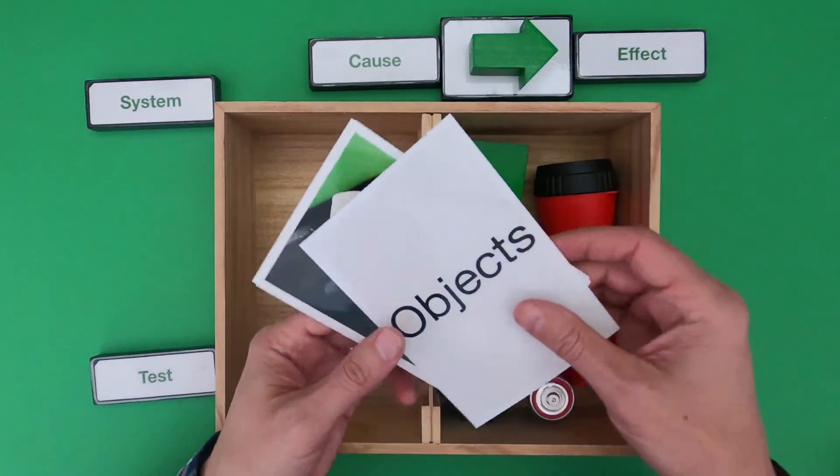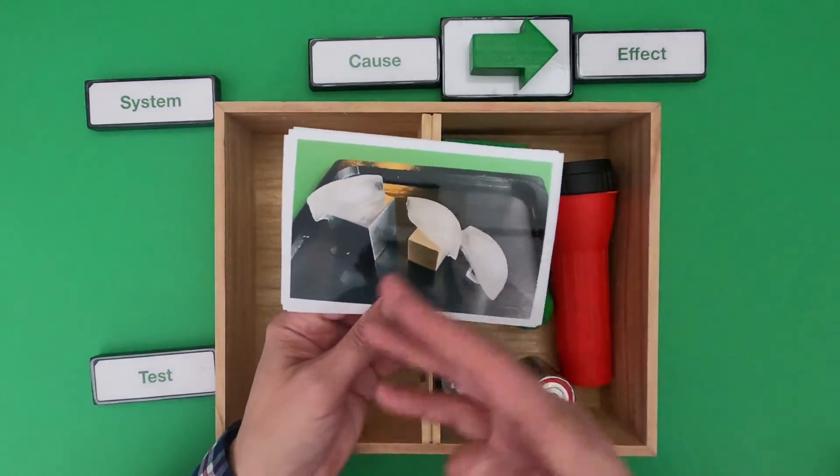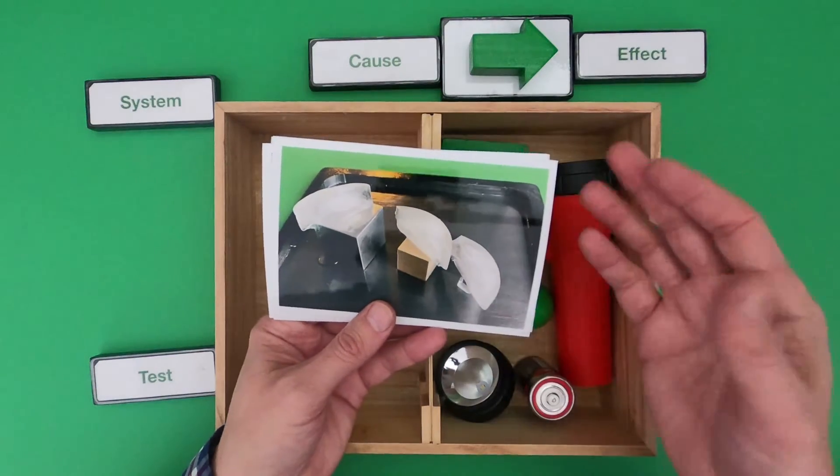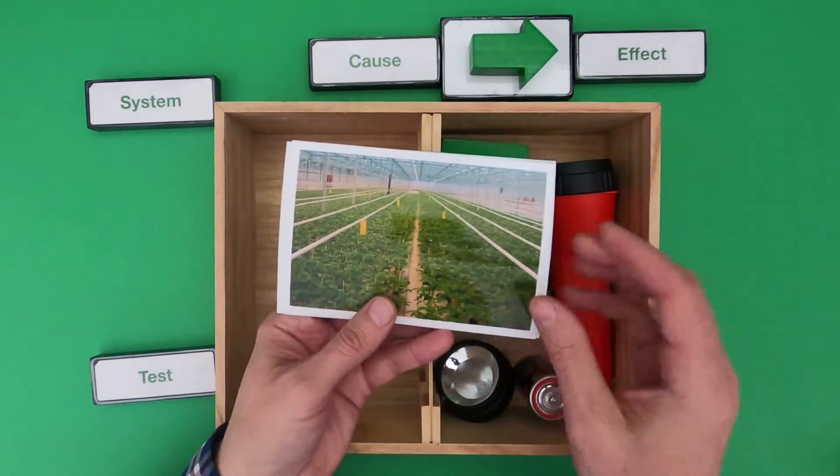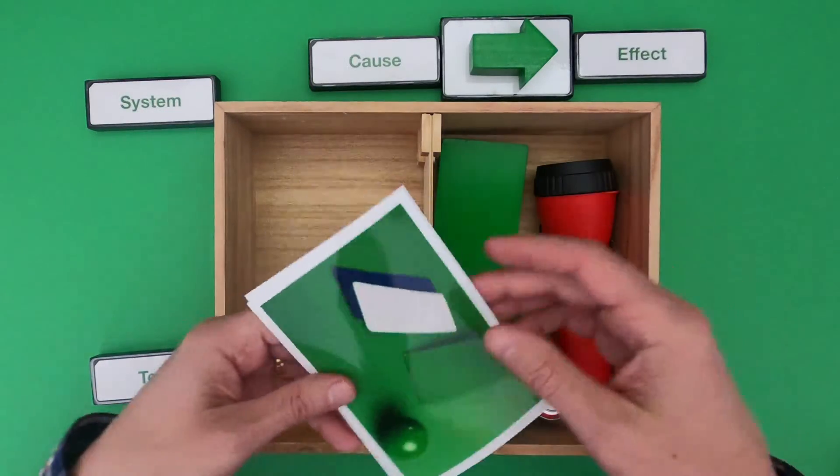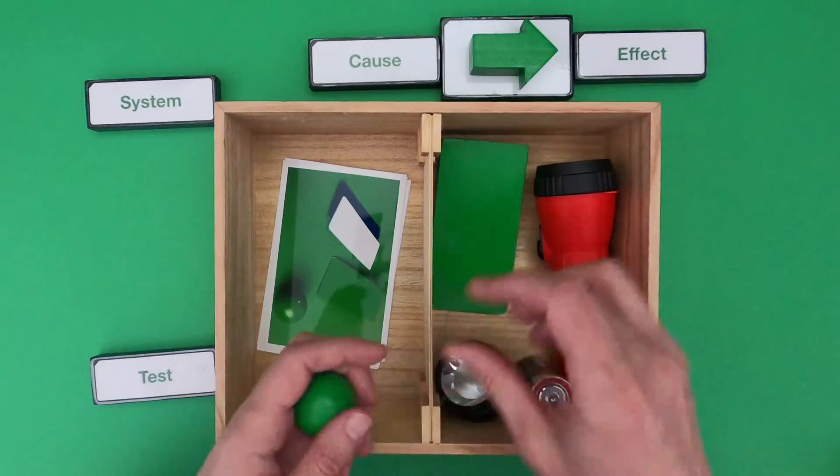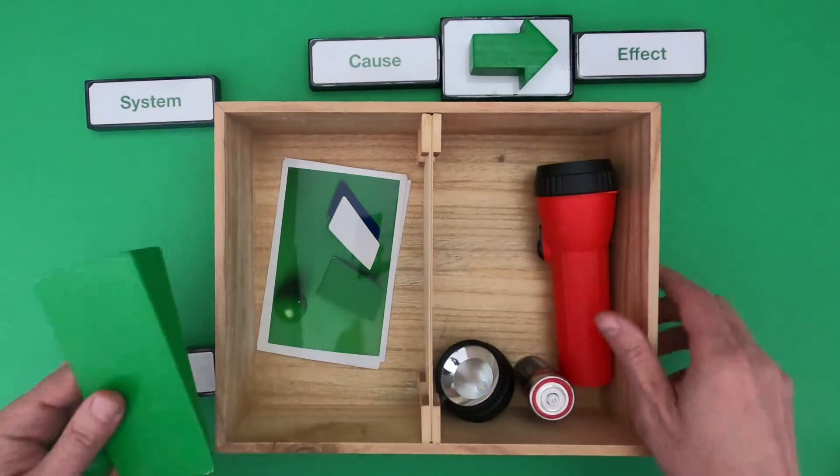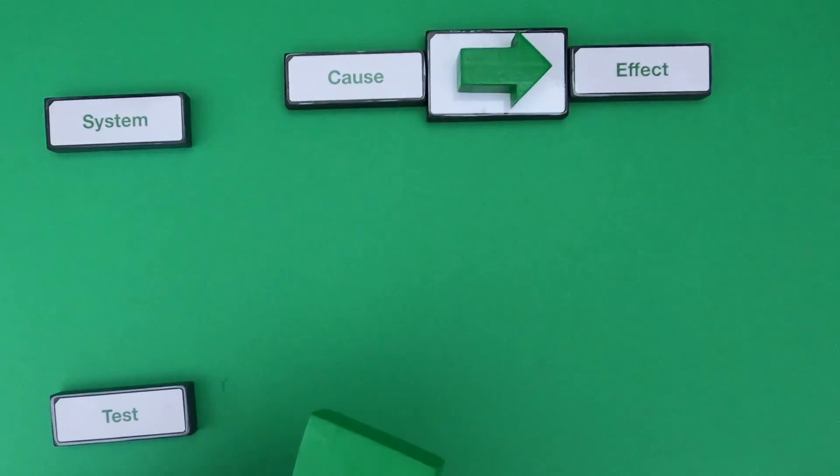After watching this video, you should be able to develop a fair test for materials and how they cool or heat materials, or we could also learn how to develop a fair test for plant growth. But I'm going to start by showing you my thinking around this ramp and ball, and then we'll work together to figure out the faulty flashlight.